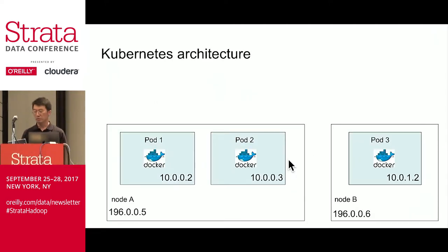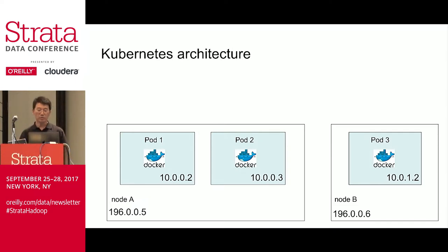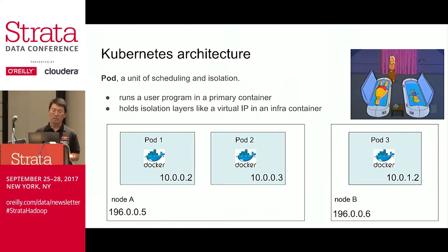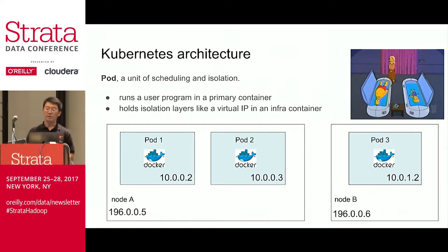Here's how a Kubernetes cluster looks. We have multiple cluster nodes, like node A and node B. Across the cluster nodes, we run multiple programs in things called pods. A pod is a unit of scheduling and isolation in Kubernetes. A pod typically consists of two containers. The primary container runs a user program like Tomcat. There's also an infrastructure container that holds isolation layers like a virtual IP address and shares that with the primary container. Each pod may have a different Docker image, and they get unique virtual IP addresses like 10.0.0.2 for pod 1. These virtual IP addresses look very different from the physical IP addresses of cluster nodes, like 196.0.0.5 for node A.